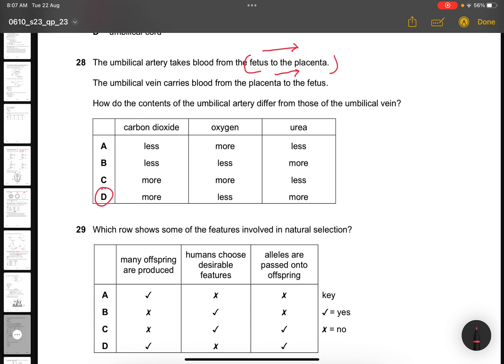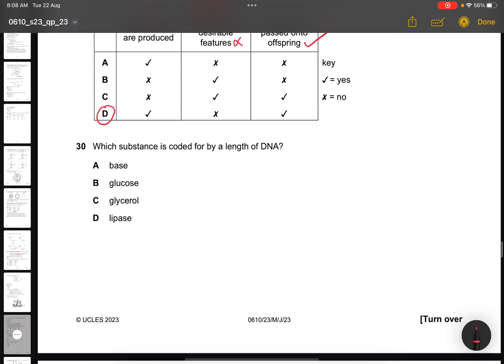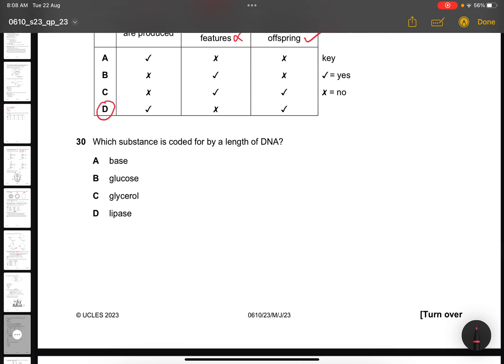Question 29. Which row shows some of the features involved in natural selection? Many offspring are produced, correct. Humans choose desirable features? No, this should be selective breeding. Alleles are passed on to the offspring, yes, correct. So the answer is D. This should be artificial selection. Question 30. Which substance is coded by a length of DNA? It's not gene. This should be lipase. So these two keywords are most important: which substance is coded.